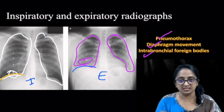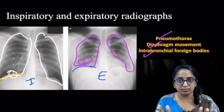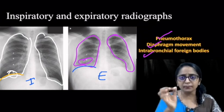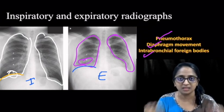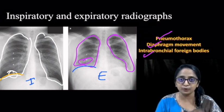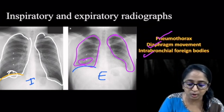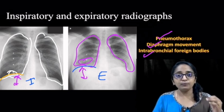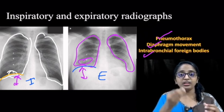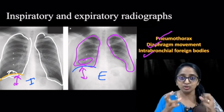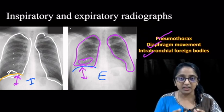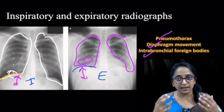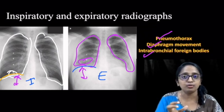The principle behind paired inspiratory-expiratory views: during expiration, the visceral and parietal pleura separate out, the pleural cavity expands, and it compresses the lung. So any minimal volume of air within the pleural cavity stands out, helping detect pneumothorax. For diaphragmatic movement, you compare the paired views and look for the change in position of the diaphragm. For intrabronchial foreign bodies, if the foreign body occludes a bronchus there would be air trapping, and during expiration the trapped lung segment still remains lucent, helping pick up air trapping caused by intrabronchial foreign bodies.